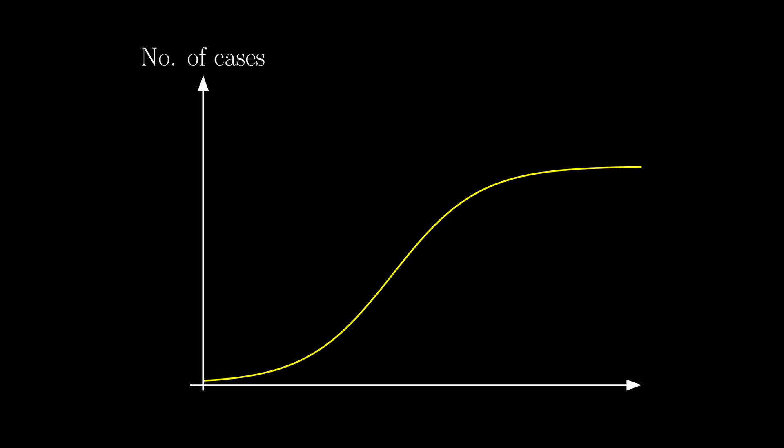Another channel 3Blue1Brown already said that we should expect a logistic curve for the number of cases, but there are two questions we want to know about this curve. First of all, what is the plateau? Is it the entire world population or 27% of the world population, like in the Spanish flu in 1918?